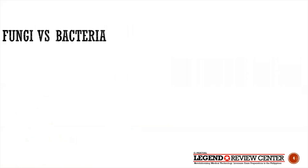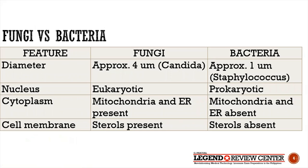This table compares fungi from bacteria. In terms of size, fungi are obviously larger. The nucleus is only present in fungi since fungi are eukaryotic, whereas bacteria are prokaryotic. Mitochondria and endoplasmic reticulum are present in fungi but absent in bacteria. Both have cell membranes, but the difference is that fungi have sterols — an example being ergosterol — whereas bacteria do not.